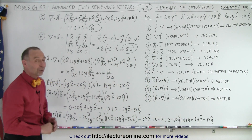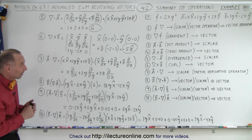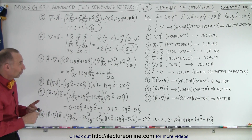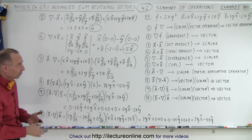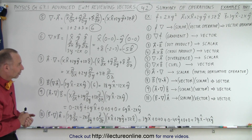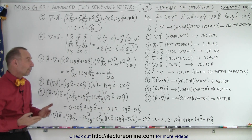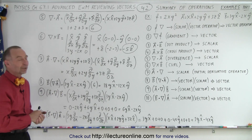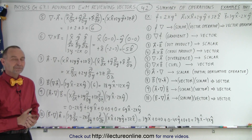There you have some good examples of all the various types of operations with vectors — the curl, the divergence, and the gradient, as well as the cross product and the dot product. That's a good summary to help you figure out what to do when you encounter these operations. And that is how it's done.